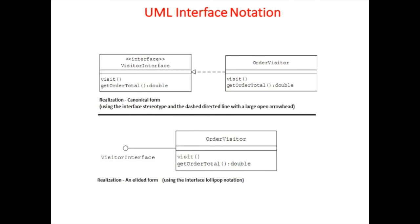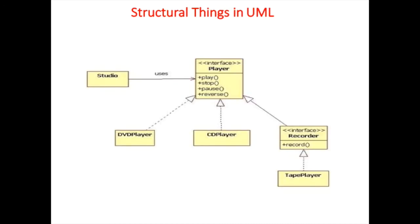Here is an example of a UML interface - the Visitor interface, which has operations like visitGetOrder or OrderVisitor, where we can visit and get order total, and they also have data type double. This is how we represent an interface. Another example is a Player interface with operations play, stop, pause, and reverse - a studio, DVD player, and CD player can all use it, and a recorder can also record it.